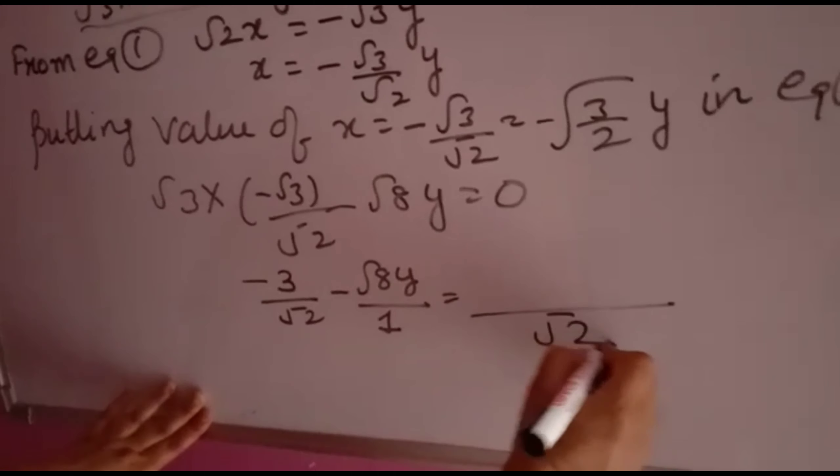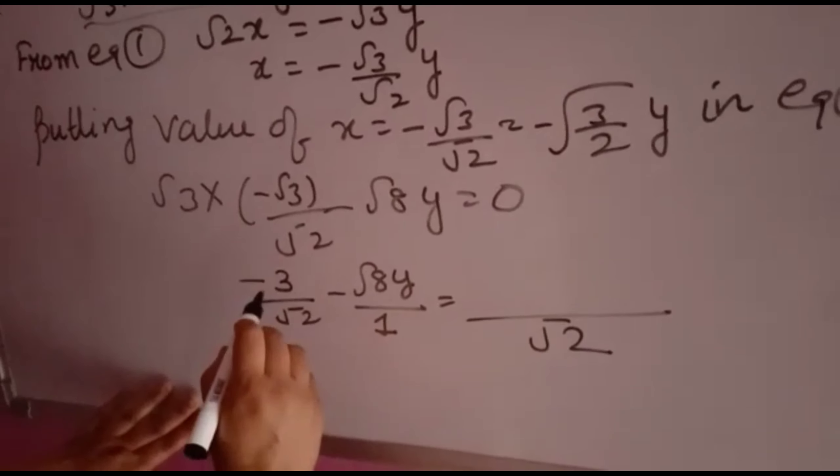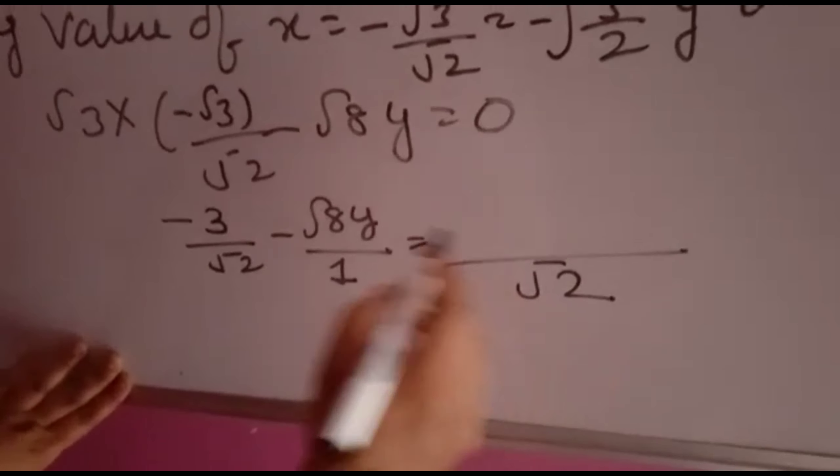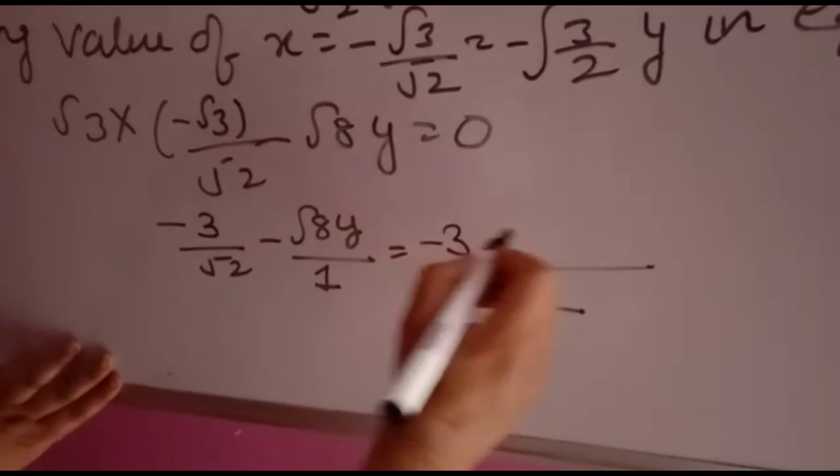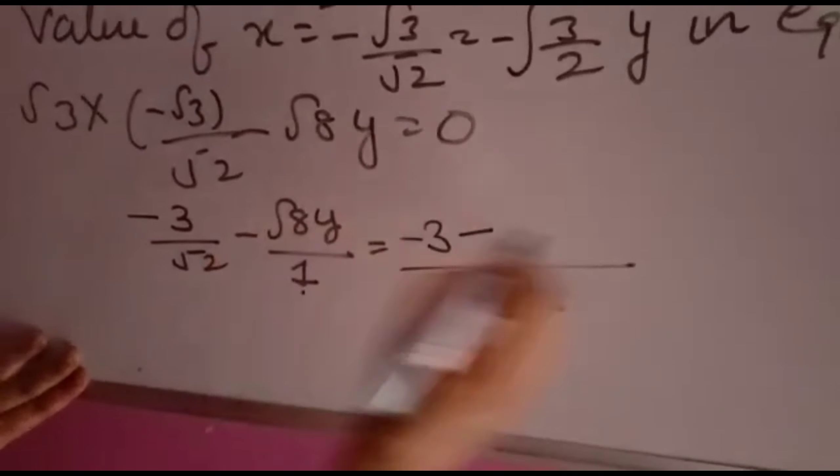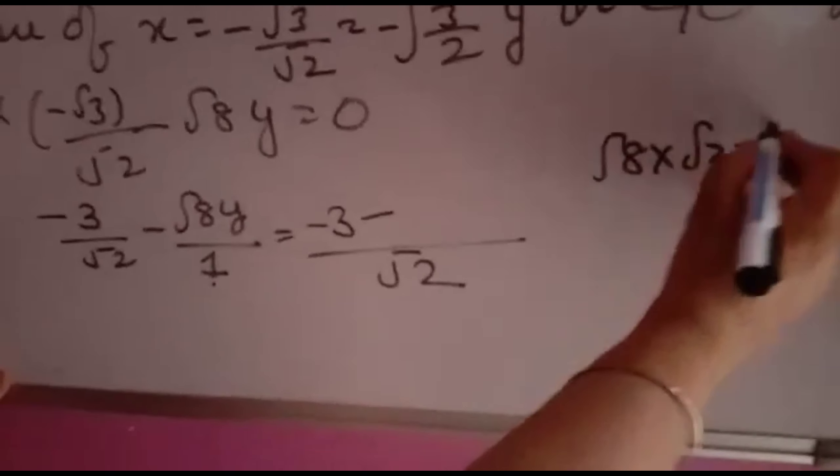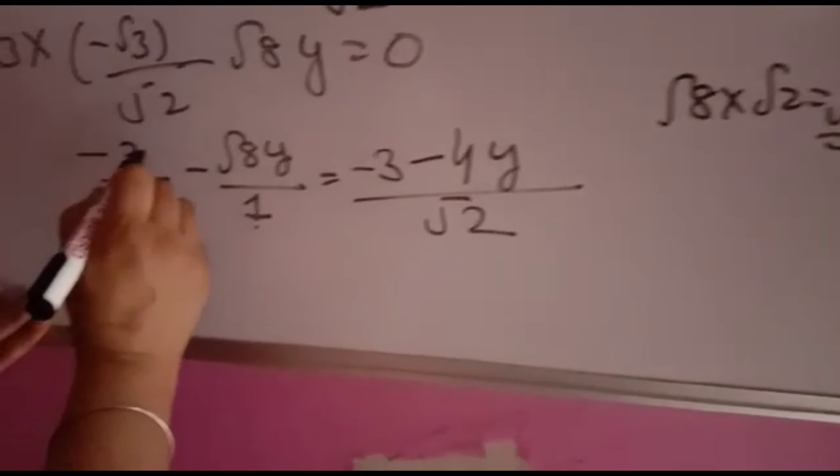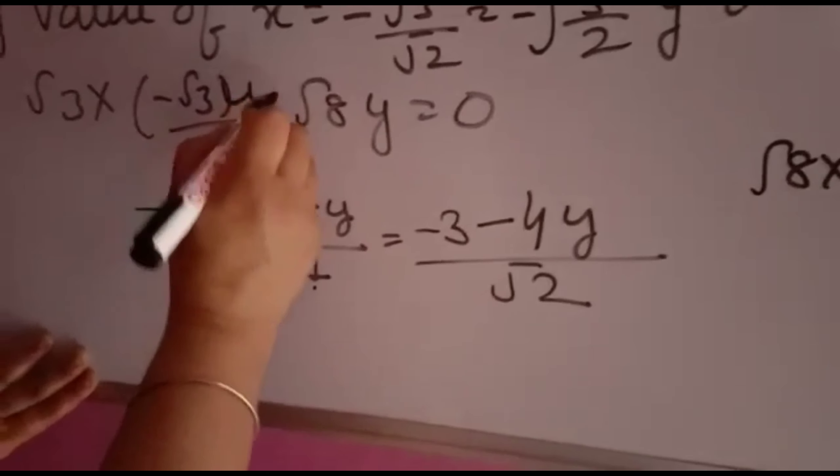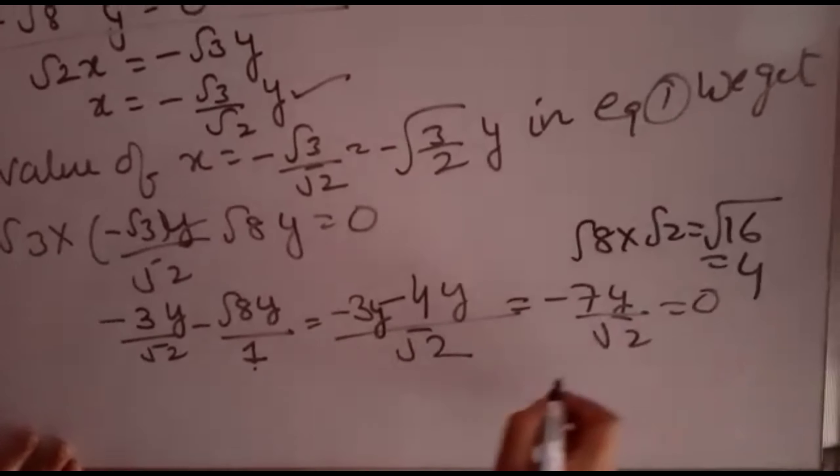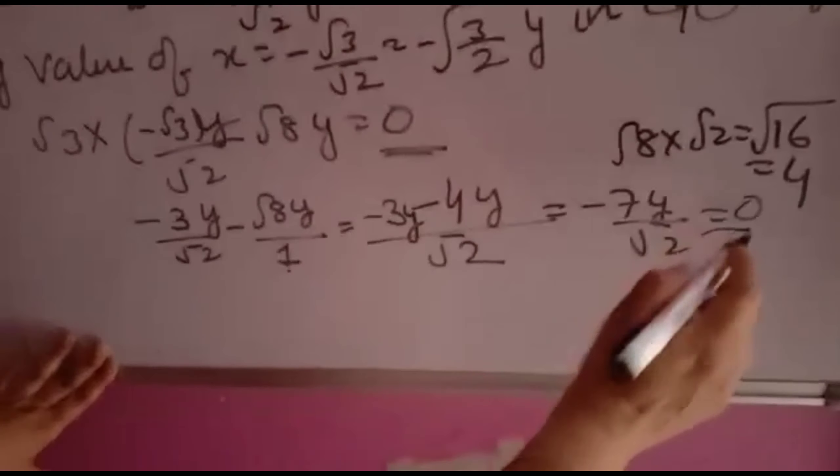Now carefully, the LCM of √2 and 1 is √2. So (-3·√2)/(√2·√2) becomes -3/2 times y. For the second term, (√2·√8y)/√2 gives √16y, which equals 4y. Combined: -3y - 4y = -7y. So we have -7y/√2 = 0.